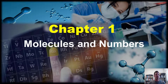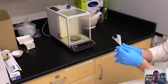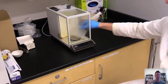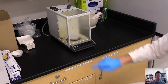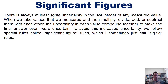Welcome to this continuation of our chapter one coverage of molecules and numbers. In this video I will teach you about significant figures. There is always at least some uncertainty in the last integer of any value that you measure on a scale, for example in the lab. So whenever we take measured values and multiply, divide, add or subtract them, the uncertainty gets compounded to make the final answer even more uncertain. To avoid this, we follow special rules called significant figure rules, or sig fig rules.